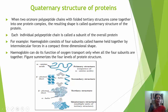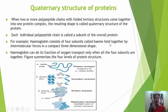Quaternary structure of protein: when two or more polypeptide chains with folded tertiary structures come together into one protein complex, the resulting shape is called the quaternary structure of the protein. Each individual polypeptide chain is called a subunit of the overall protein. For example, hemoglobin consists of four subunits held together by intermolecular forces in a compact three-dimensional shape. Hemoglobin can carry out its function of oxygen transport only when all four subunits are together.